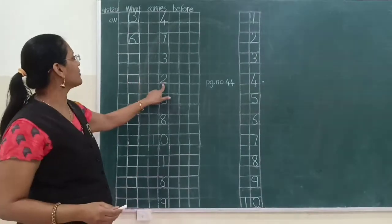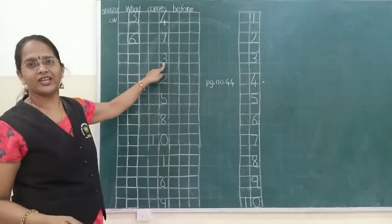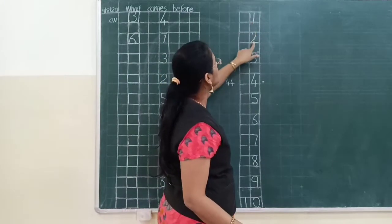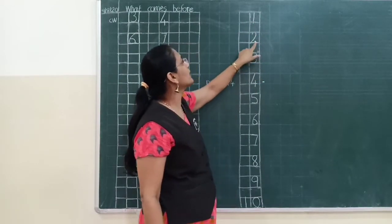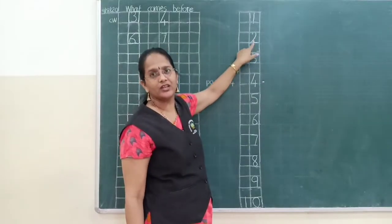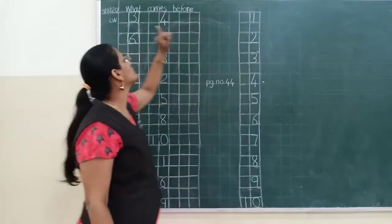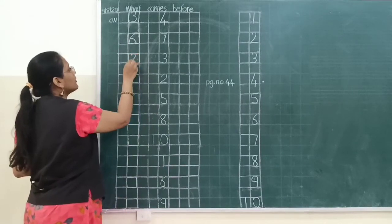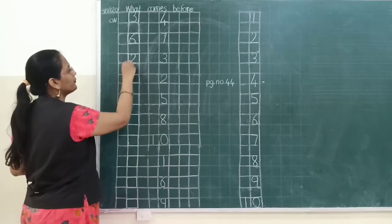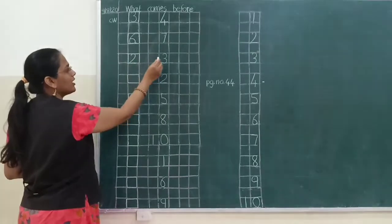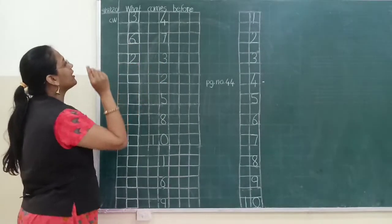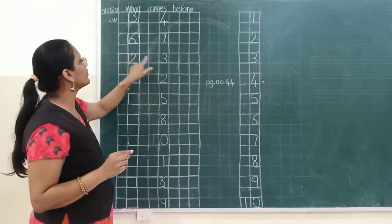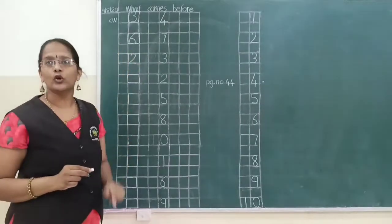So now next number — number three. Let's count again: one, two, three. Which number comes before three? It's two. So what we will write over here? Two. Aur uske baad book mein likhna hai — two, three. Two ke baad kya aaya? Three. So yeh correct hai. Three ke liye before number — what comes before three? It's number two.